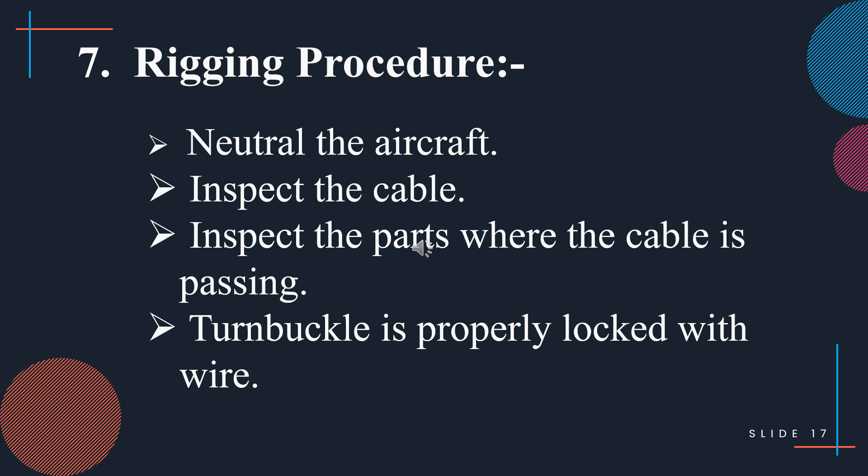In the rigging procedure, place the aircraft in neutral position, examine the cable, then examine the areas where the cable is inserted, and ensure safety wire is properly used to lock the turnbuckle.